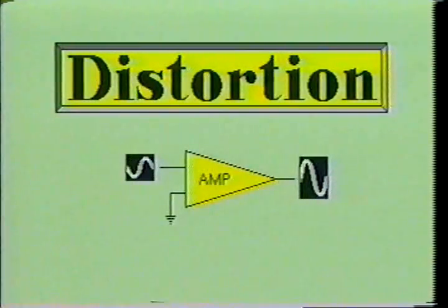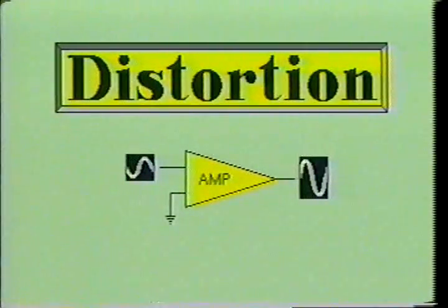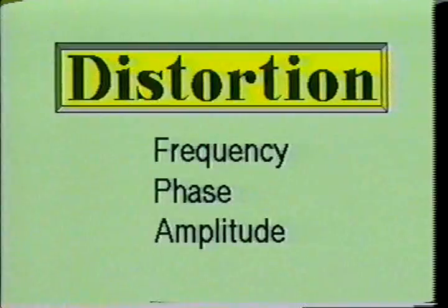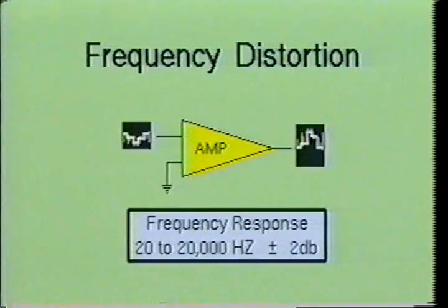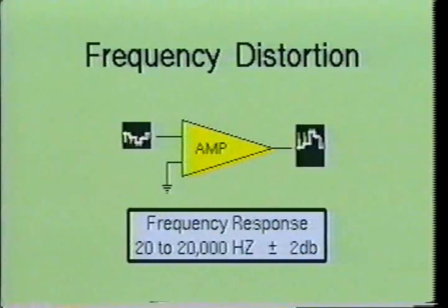The third parameter of the amplifier is called distortion. The amplifier is designed to increase the amplitude of the input signal by its gain factor. Since there are no perfect components or circuits, all amplifiers will distort the input signal. Distortion may occur in frequency, phase, or in the amplitude of the signal. Frequency distortion occurs when a certain range of frequencies are amplified by a different amount than others. This distortion is the result of the capacitance and inductance used throughout the circuit. The degree of frequency distortion in the amplifier is described by its frequency response specifications.